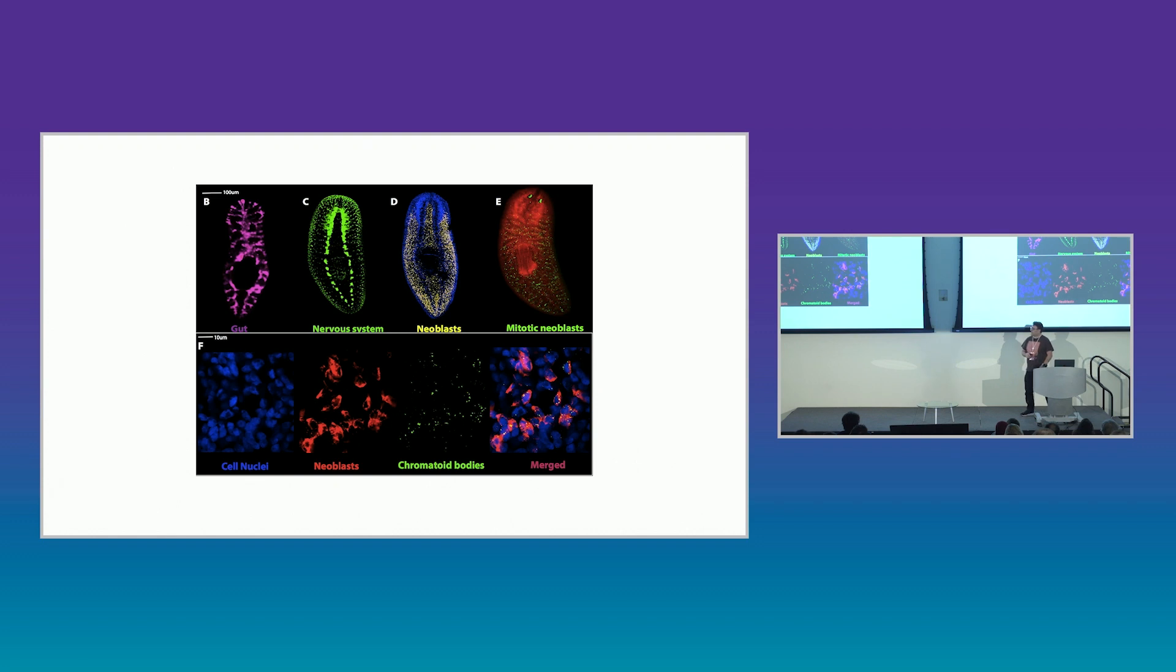My colleagues and I focus on regeneration in planarian flatworms that have been a model of regeneration for over 200 years, perhaps most famously by Thomas R. Morgan before he invented genetics using flies. And just looking at their anatomy here, the thing we're focusing on today are these cells labeled in yellow, which are through the whole body, and they're the only cycling cells in the body, and are in fact the stem cells.